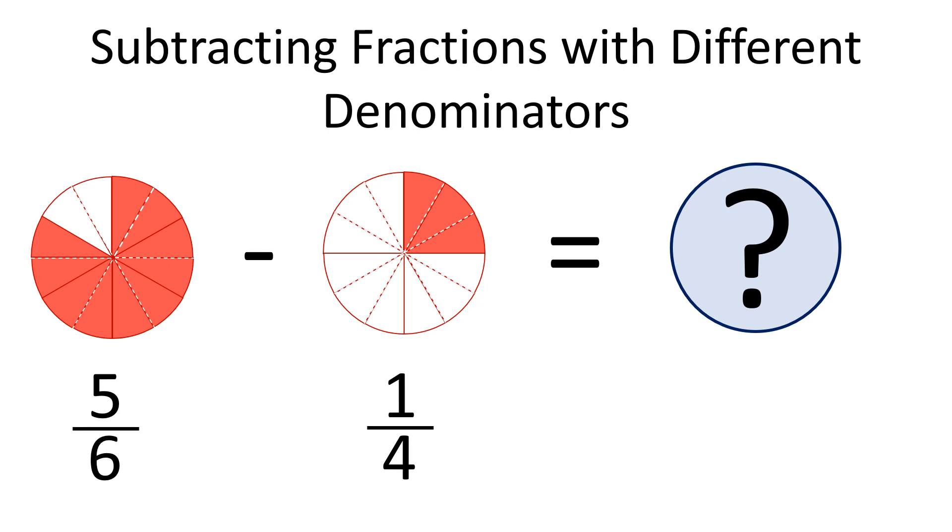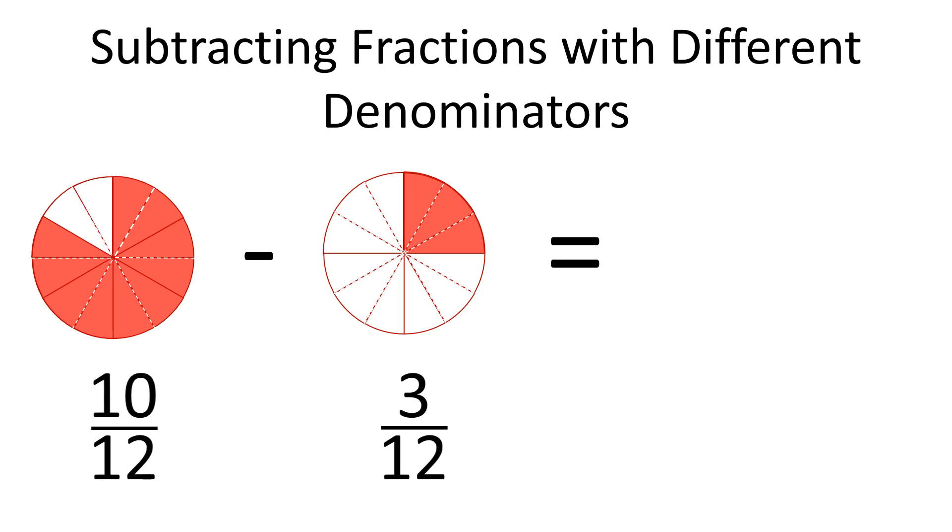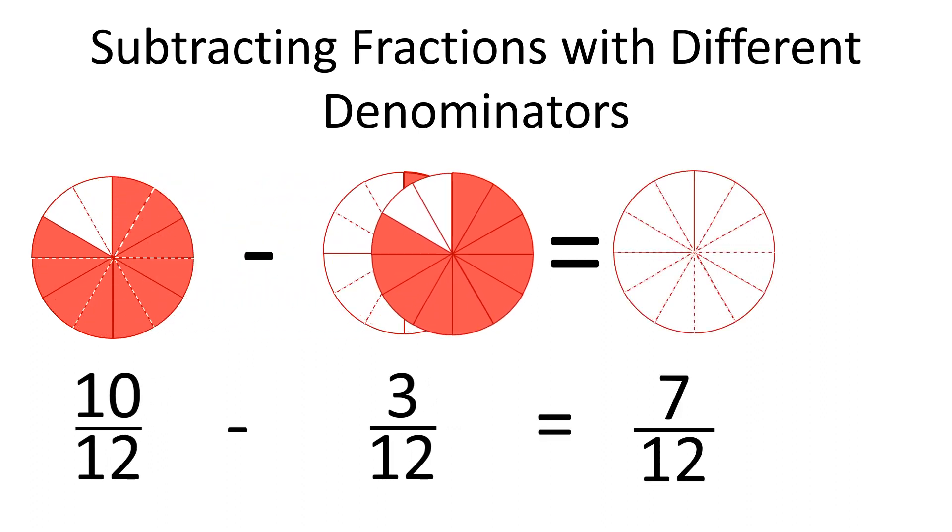Here we can rewrite both fractions as equivalent fractions with the same denominator of 12. Thus we rewrite 5 sixths as 10 twelfths and 1 fourth as 3 twelfths. So 10 over 12 minus 3 over 12 is 7 over 12.